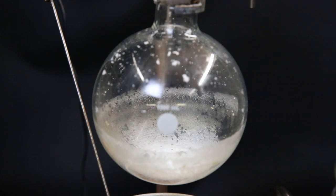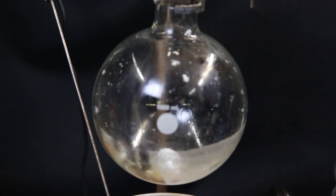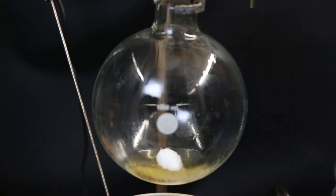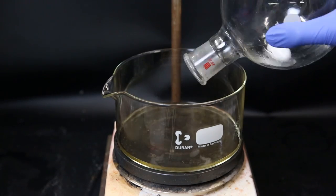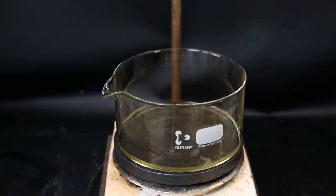Now to take out the product, I add some acetone to dissolve it and pour it all into a crystallizing dish. I wash it with some more acetone and then start heating the dish to evaporate it all off.